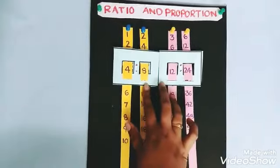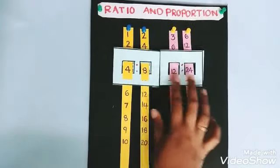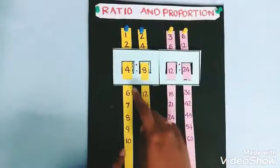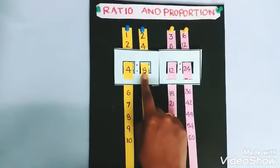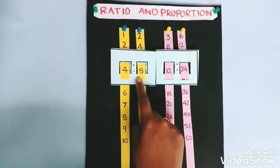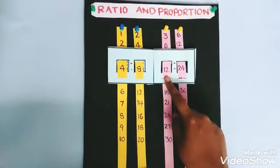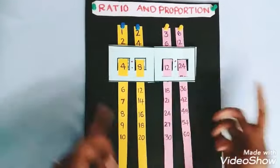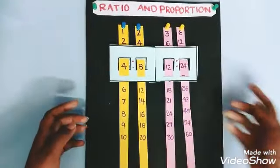This is ratio and proportion where two ratios are equal. How can you tell these two are equal? Here, 4 to 8, that means 1 is to 2. 12 to 24 is also 1 is to 2. So these two ratios are equal.